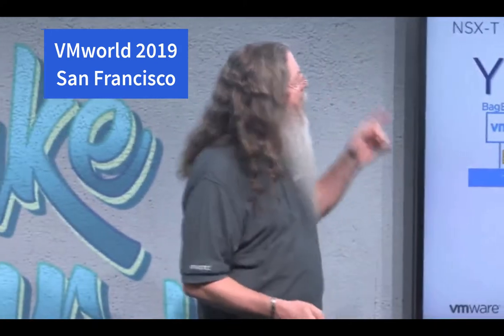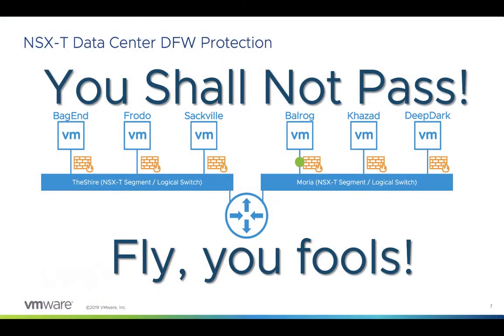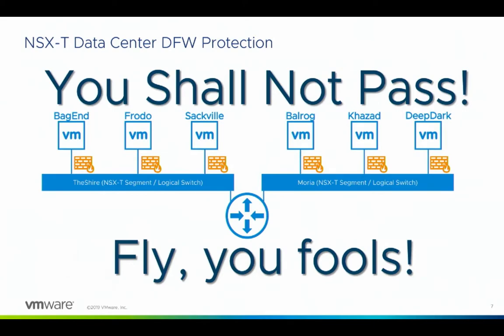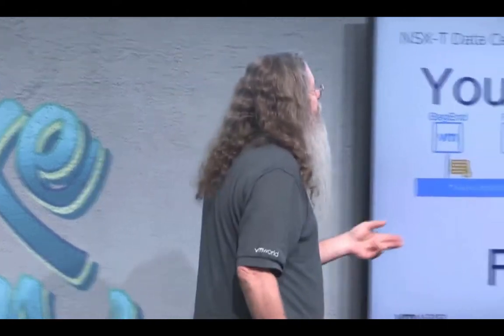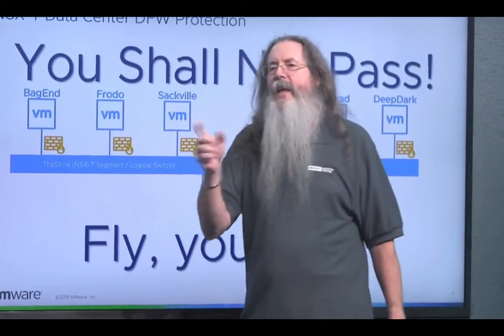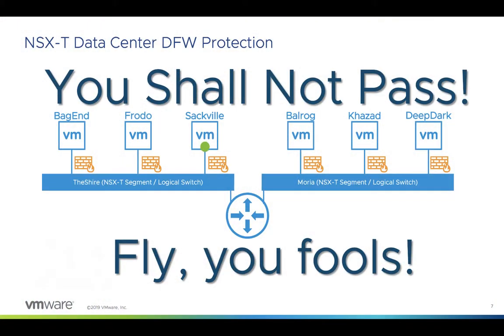The Balrog is not supposed to be able to pass - not supposed to be able to go into Khazad-dum, not be able to pass that bridge. That virtual machine can't go past there. There's a green dot that turns red - you shall not pass. Look where it happens - I'm not filtering this after it goes onto the network, I'm filtering this before it even hits its first switch. The same thing applies between Sackville and Bag End - blocked. Firewall blocked it. You shall not pass.